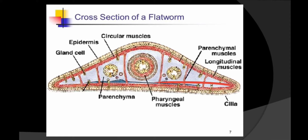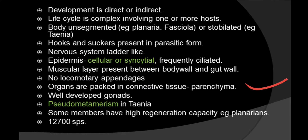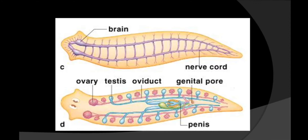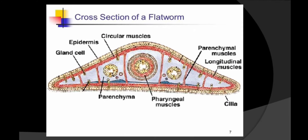Don't confuse these parenchyma with plant parenchyma tissue — they are different. There are no locomotory appendages in these animals. Organs are packed in a tissue called parenchyma. Well-developed gonads are found in this phylum. Here you can see the ovaries, the testes shown in blue color, the penis, the oviduct, and the genital pore from where they eject their gametes.